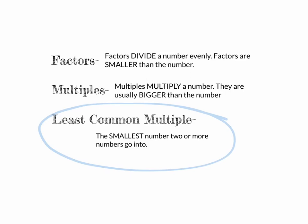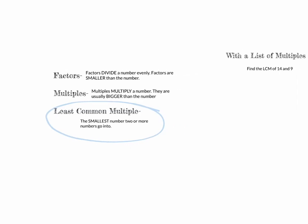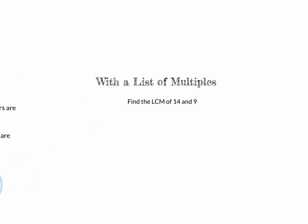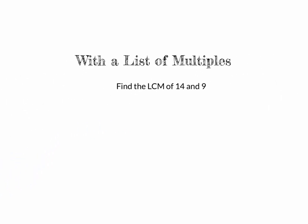We're going to look at two methods for finding least common multiple. The first method is listing multiples, and the second is using prime factorization. For the list of multiples method, you can use your multiplication chart or just your multiplication facts.